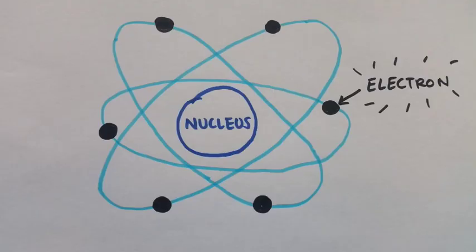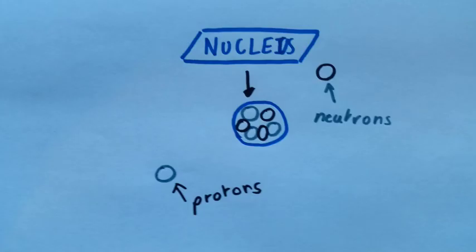You know that an atom has a nucleus and electrons that are attracted towards each other by what is called the electrostatic attraction, and you also know that in an atom the nucleus is composed of protons and neutrons.